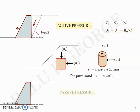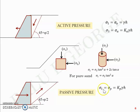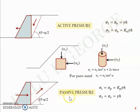In the passive pressure case, the angle is 45 − φ/2, and the movement of the wedge is rightward and upward. In that case, the major principal stress is the passive pressure or the horizontal stress, and the minor principal stress is the vertical stress — sigma_v = γh. In short: in active pressure, the minor principal stress is the active pressure, and in passive pressure, the major principal stress is the passive pressure.